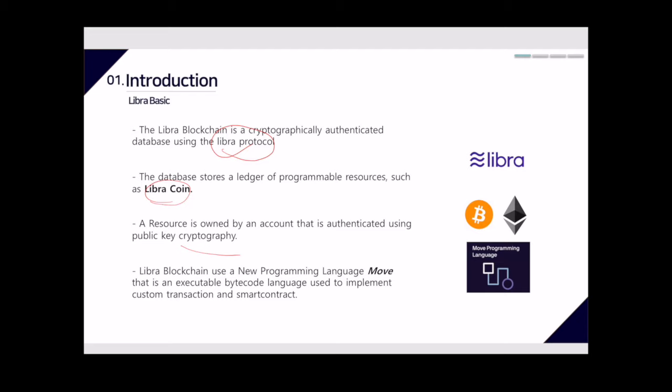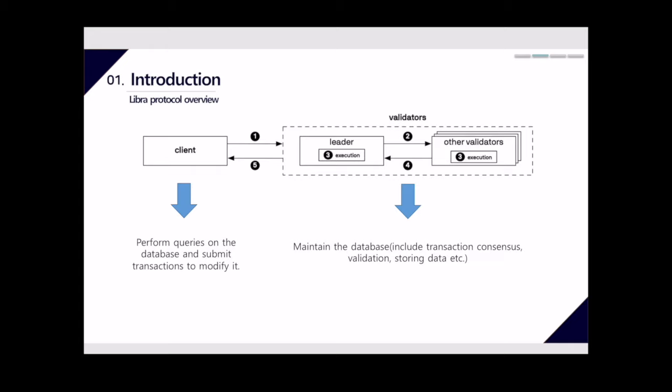The Libra blockchain uses a new programming language called MOVE, which is an executable bytecode language used to implement custom transactions and smart contracts. The Libra protocol has two types of entities: clients and validators.